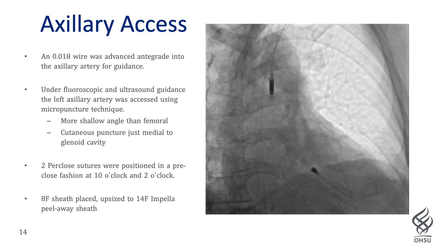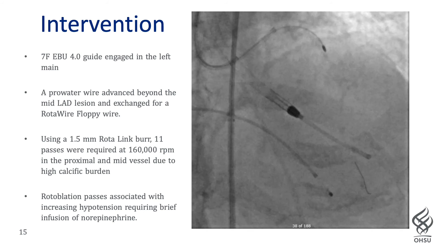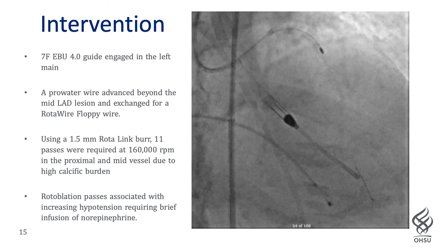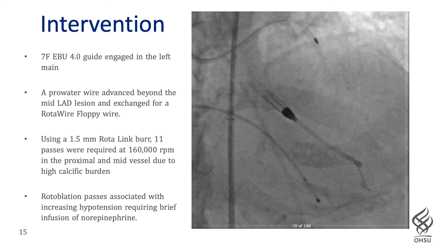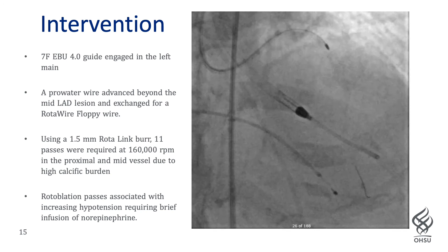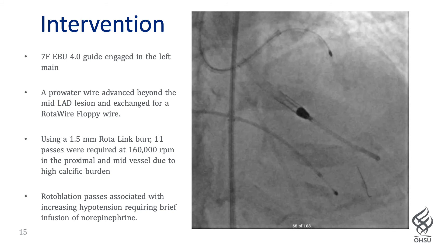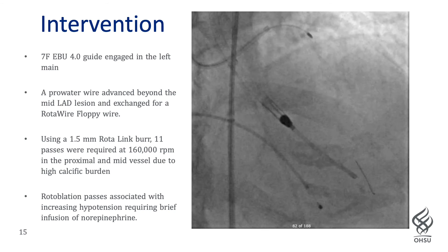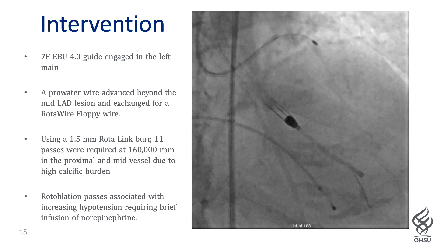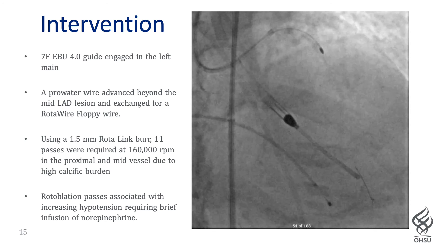The Impella device was advanced retrograde across the aortic valve into the LV and positioned under fluoroscopy. We used a 7-French EBU 4.0 guide to engage the left main artery and advanced a Prowater wire beyond the proximal and mid-stenosis. This was then exchanged for a RotaFloppy wire. We used a 1.5-millimeter burr, requiring 11 passes at 160,000 RPM to modify the highly stenotic calcification in the proximal and mid-LAD. These passes were associated with brief hypotension, for which a norepinephrine infusion was initiated.